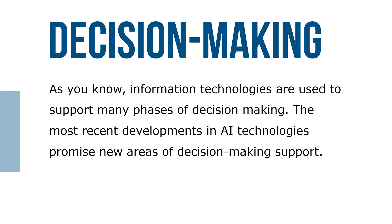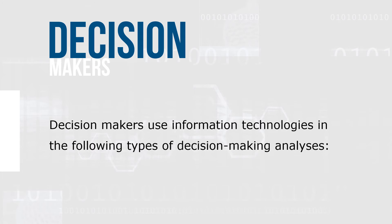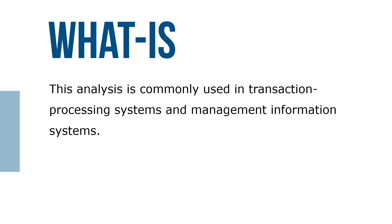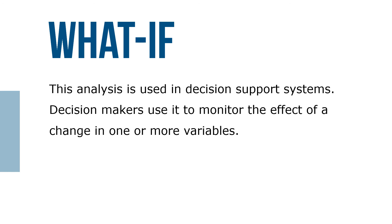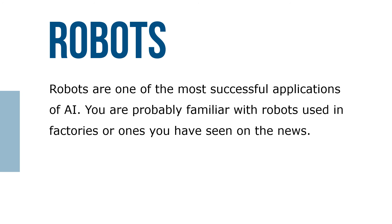Decision makers use information technologies in the following types of decision making. What-is analysis is commonly used in transaction processing systems and management information systems. What-if analysis is used in decision support systems — decision makers use it to monitor the effect of a change in one or more variables.